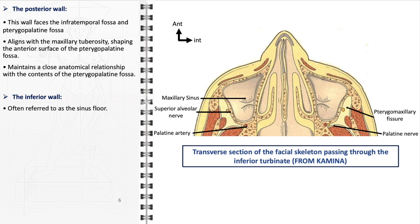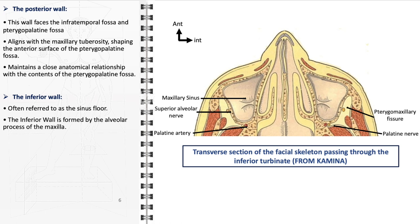The inferior wall, commonly known as the sinus floor, is formed by the alveolar process of the maxilla, which holds the upper teeth. The relationship between the sinus floor and the teeth is particularly significant in dentistry. The proximity of the tooth roots to the sinus floor can sometimes lead to complications in dental procedures such as tooth extractions, or in cases of dental infection spreading to the sinus. Moreover, in some individuals, the roots of the upper teeth can protrude into the sinus cavity, creating a risk of sinus perforation during dental procedures.